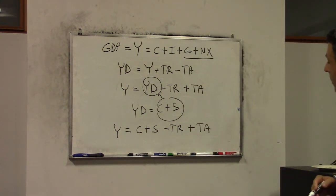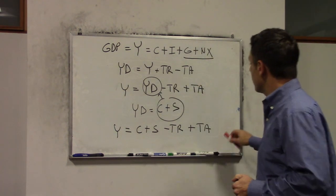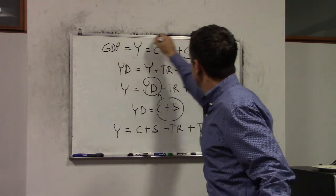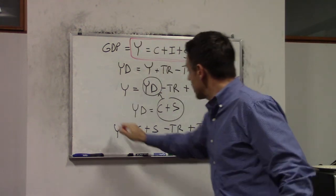Now you see that we have basically two expressions for Y. One is up here, and one is down below.